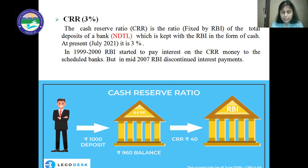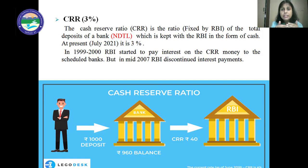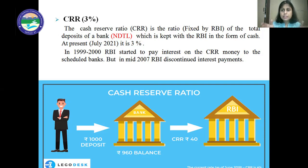According to the situation in the economy, the RBI increases or decreases the CRR. If there is inflation — meaning the prices of goods are high in the market — the RBI will increase the CRR ratio. By increasing CRR, there will be less money with the banks for lending purposes. This reduces the money supply in the economy, people have less money, demand for goods decreases, and prices of products also decrease. This is how the RBI controls inflationary situations.